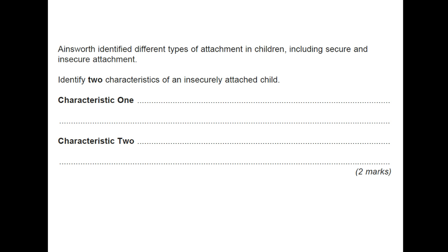Ainsworth identified different types of attachment in children, including secure and insecure attachment. Identify two characteristics of an insecurely attached child. Notice they didn't specify insecure resistant or insecure avoidant — they just said insecurely, so whichever one you put is fine. Characteristic one: ignores caregiver. Characteristic two: seeks and rejects caregiver on return. That would be absolutely fine.